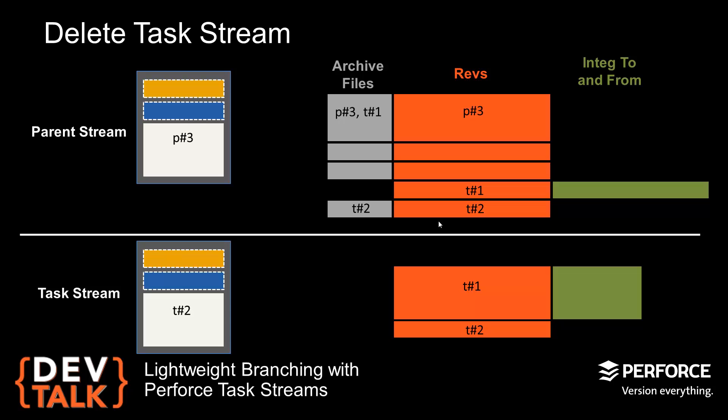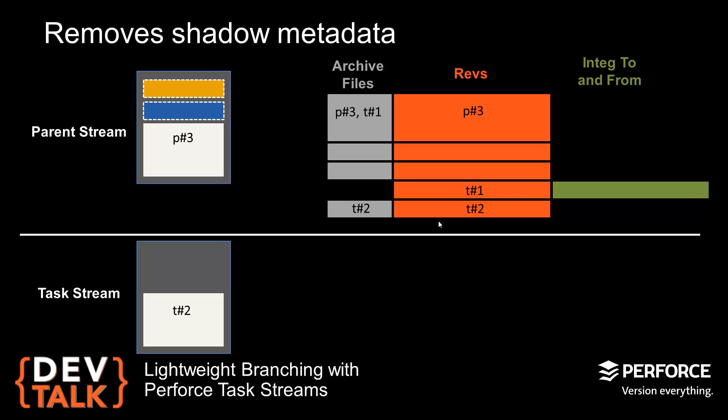Back to PowerPoint. There are two options. The first option is to delete the task branch — this removes the metadata from the shadow table. When we're talking about deleting a task stream, we're just deleting the task stream spec, which leaves the metadata in the shadow tables, but it won't touch any of the archived files or the Rev and Integ records that got copied into your real tables. So you're not losing any of those files that you changed in the task stream.